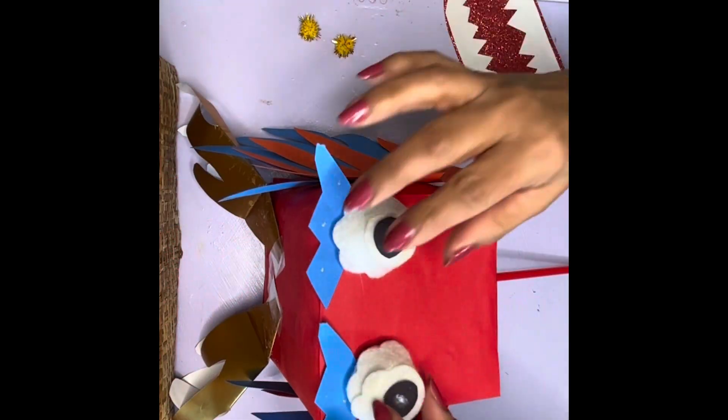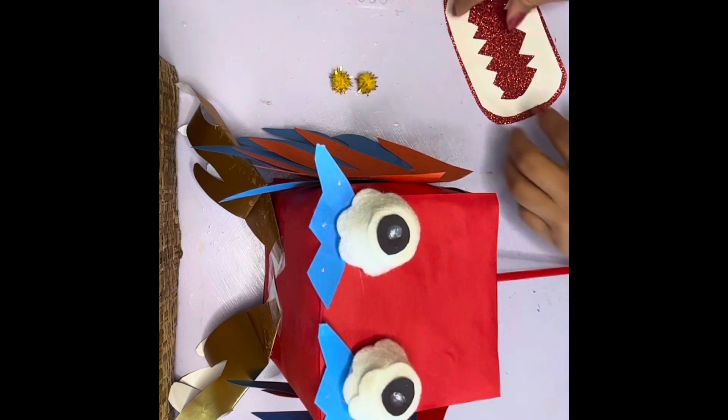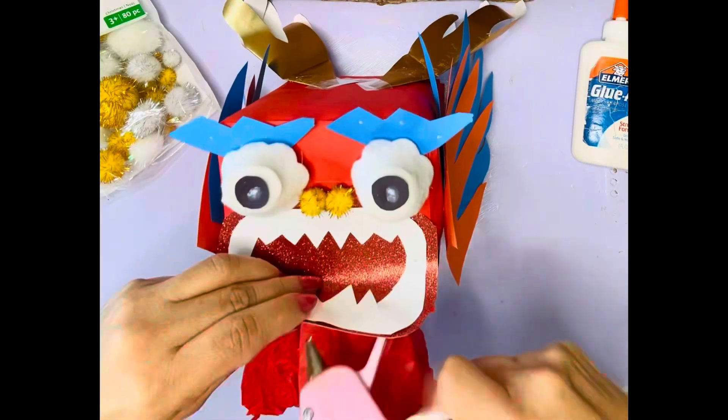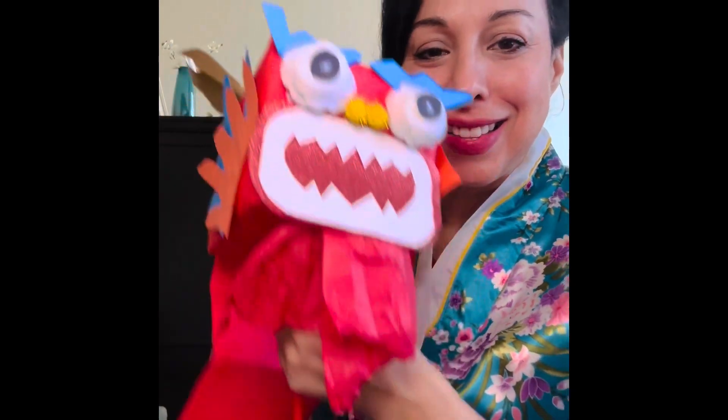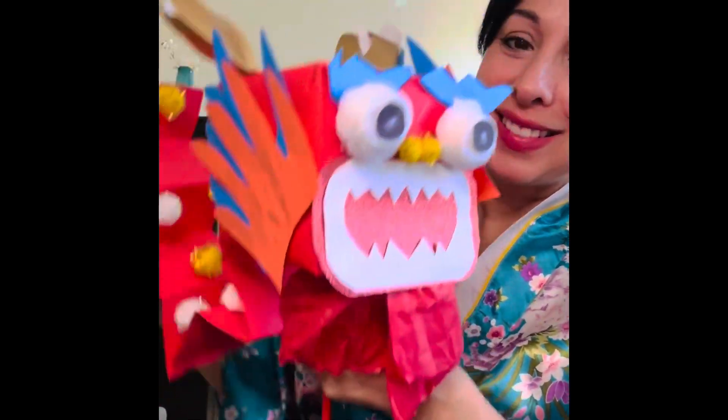So I put everything together—the eyebrows, the eyes, the eyeballs with paper on some cupcake holders, the mouth, the nostrils with two pom-poms, and some straws. I put those together with some hot glue and tape, pom-poms on the back, and a little beard of tissue paper. Look how cute he came out! I hope you have fun making your dragon.